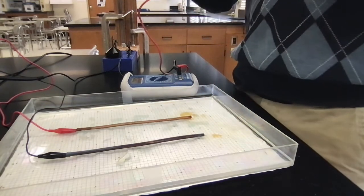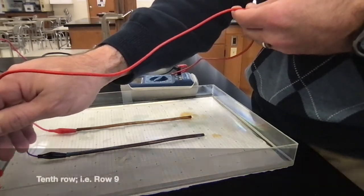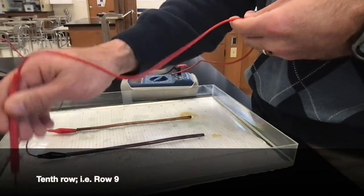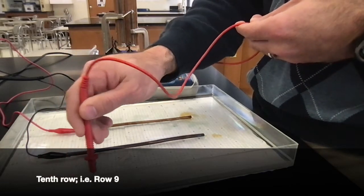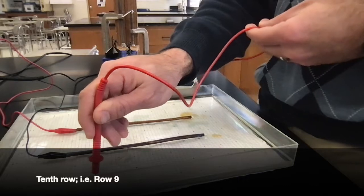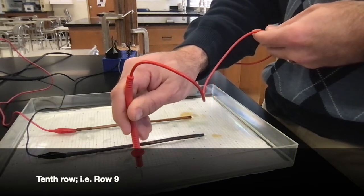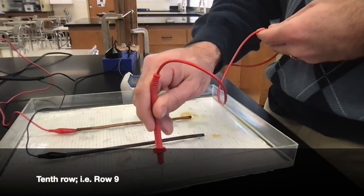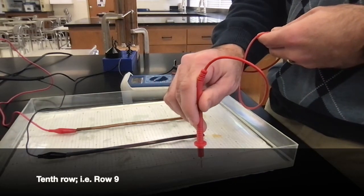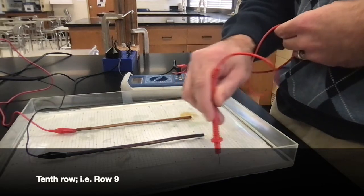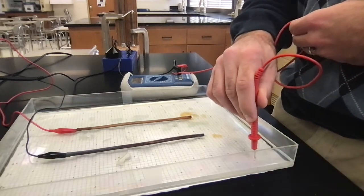In the last row, the tenth row labeled row 9. First column labeled 0 is 2.3, 1 is 2.2, 2 is 1.8, 3 is 1.6, 4 is 1.3, 5 is 1.2, 6 is 1.1, 7 is 1.1, 8 is 1.3, 9 is 1.5, 10 is 1.8, 11 is 2.2, 12 is 2.5.